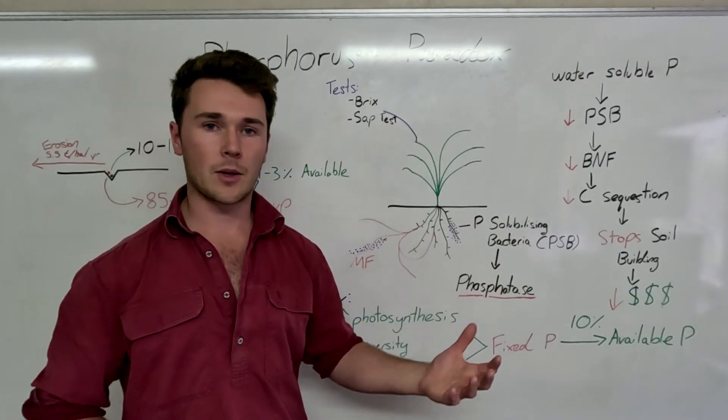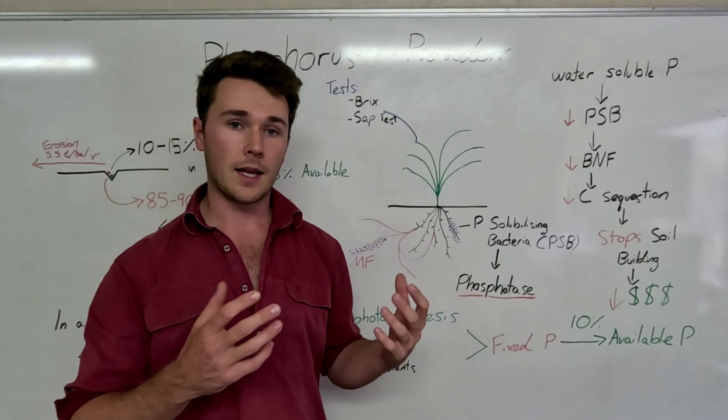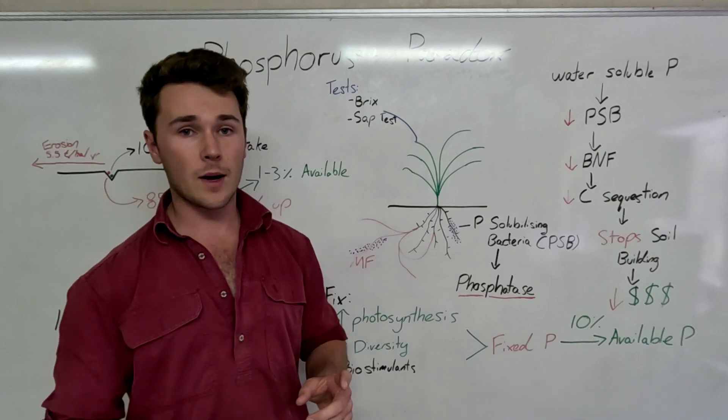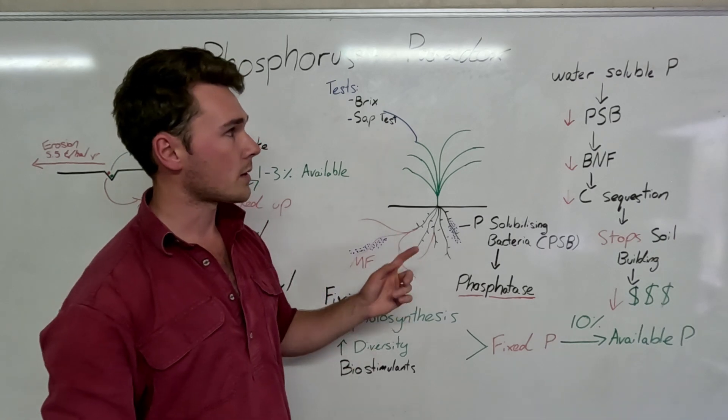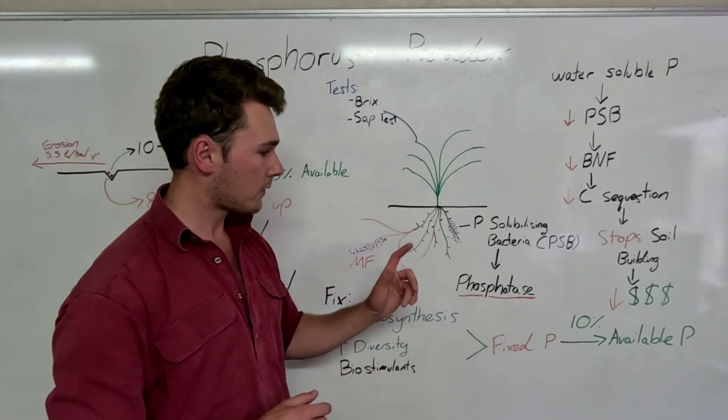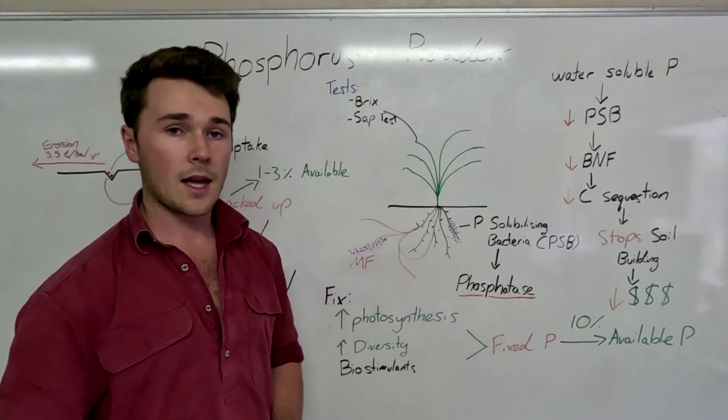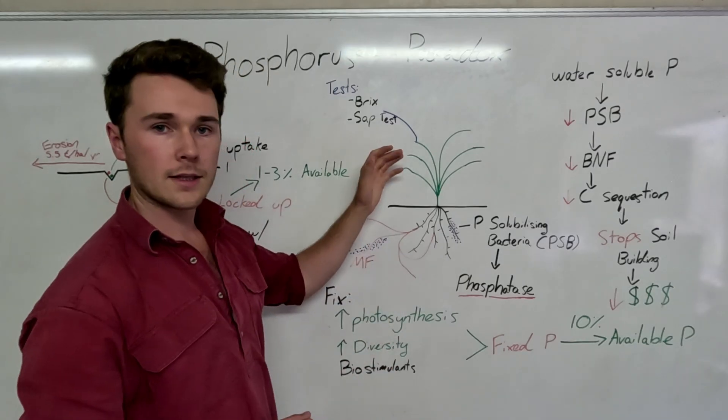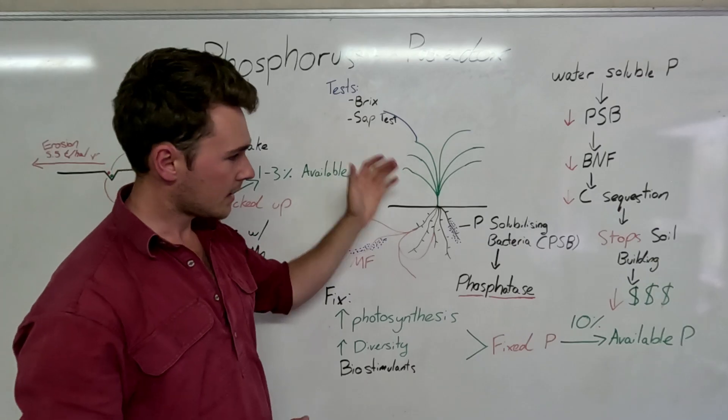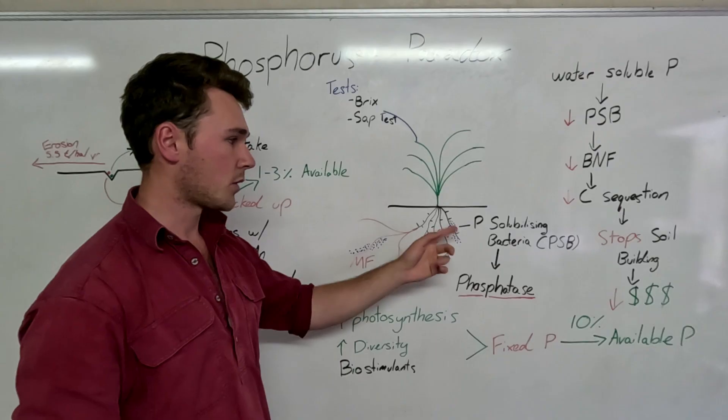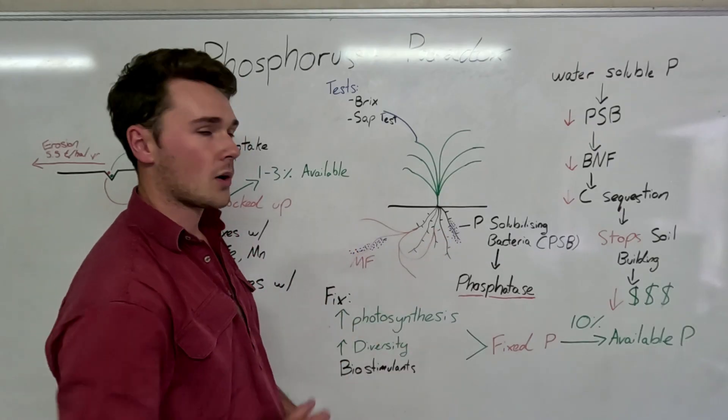And you're probably thinking, well, if I don't apply water soluble phosphorus, my plants are going to become deficient in phosphorus. And then I'm going to have a yield reduction, which is true. However, there's other ways we can get our phosphorus into our plants without water soluble phosphorus. So the aim of the game is to increase our phosphatase in our soil. And the only way to do that is by reconnecting this link between our plants producing carbon and feeding it to our microbes, or specifically our phosphorus-solubilizing bacteria and our mycorrhizal fungi.